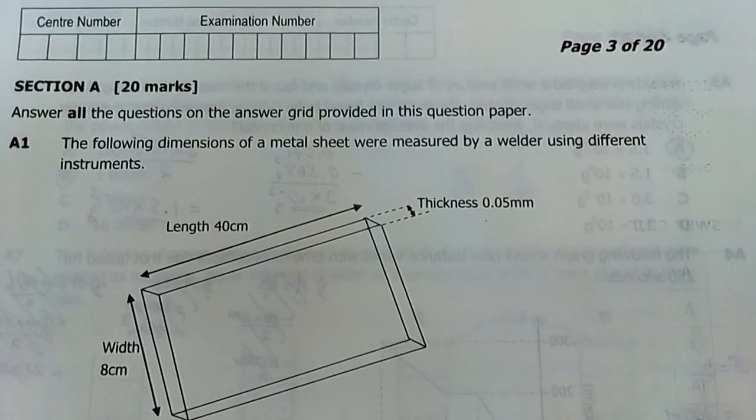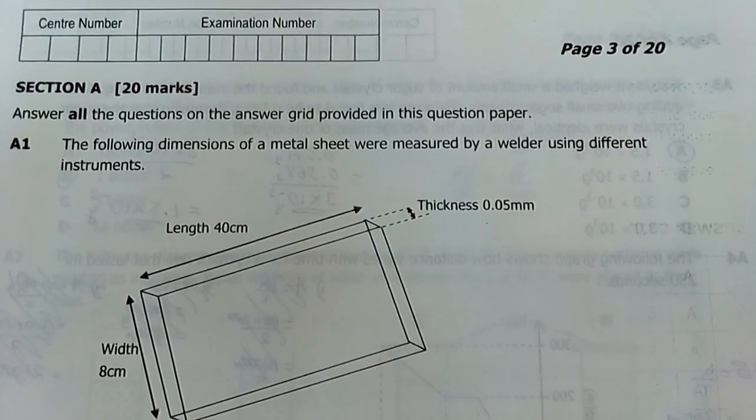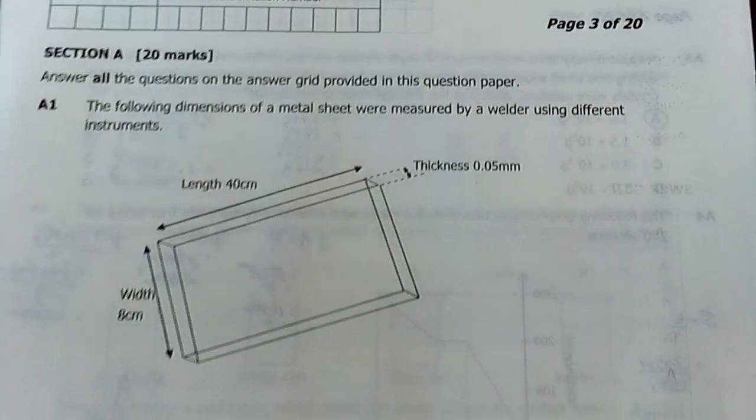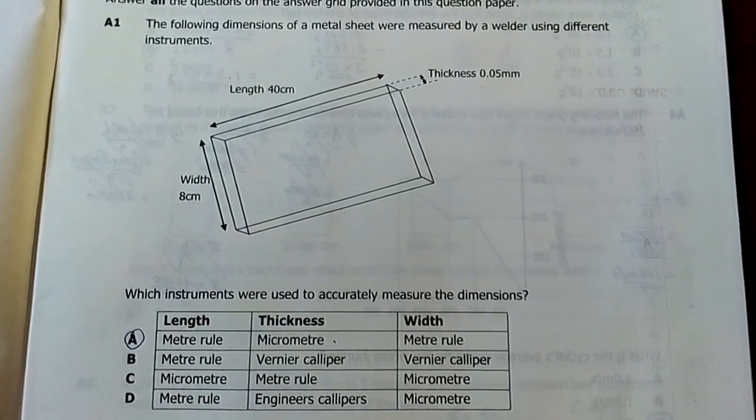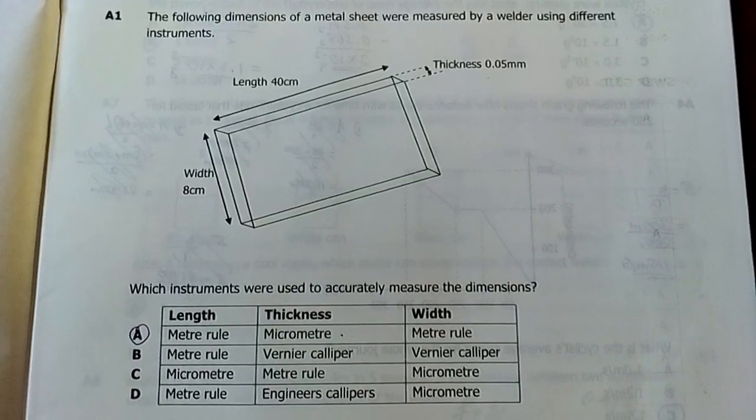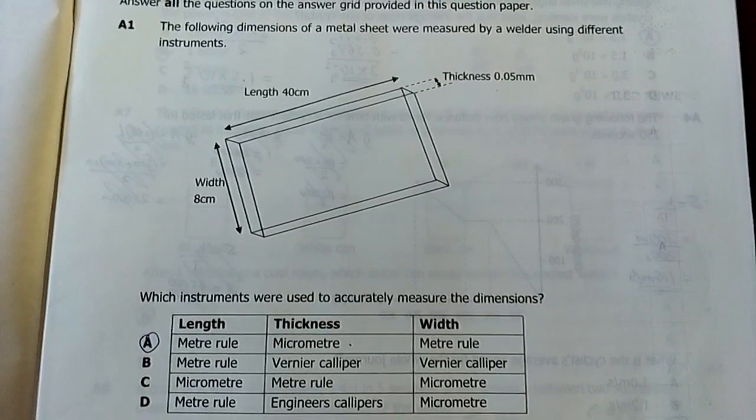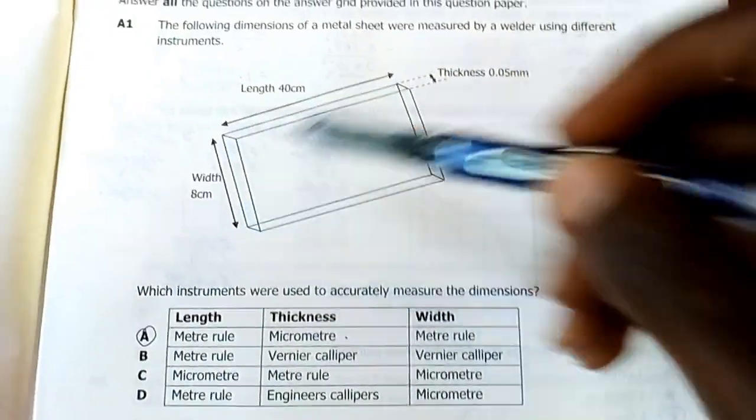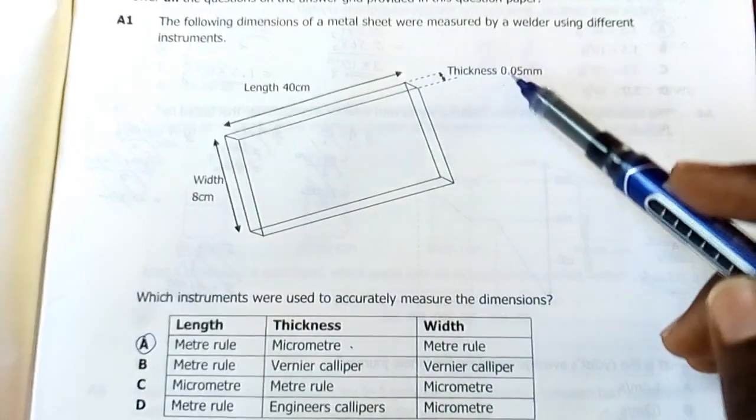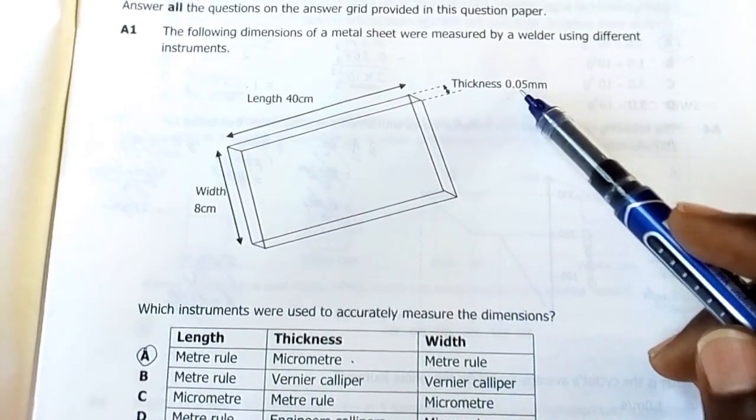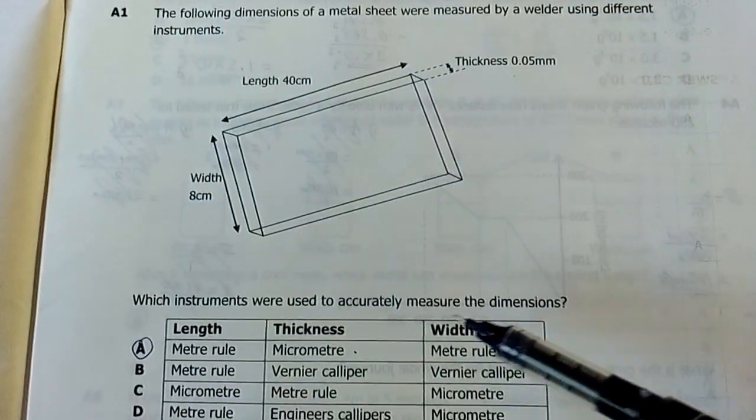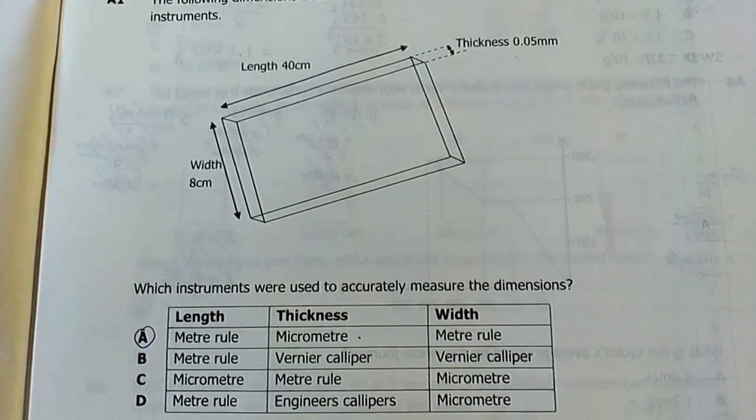A1: The following dimensions of metal sheet were measured by a welder using different instruments. Which instruments were used to accurately measure the dimensions? My answer is B. You can use a meter rule to measure this and this, but the thickness is very small and this degree of accuracy can only be reached by a micrometer screw gauge.